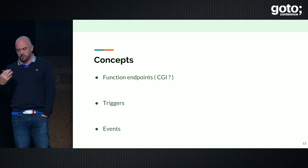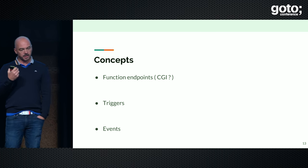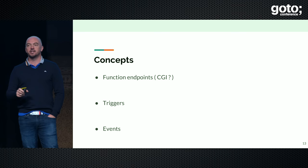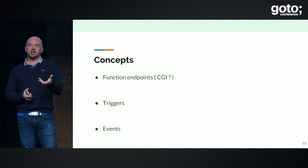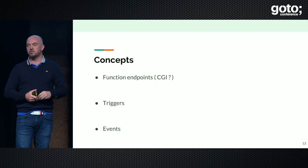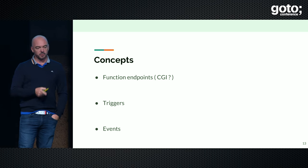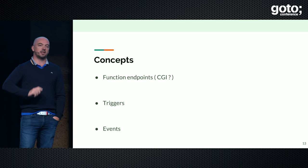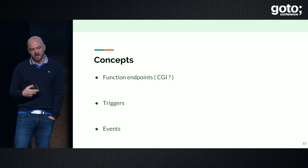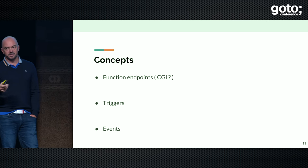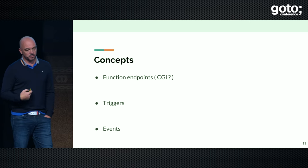When you build those things, you have three concepts that are important in terms of applications. You have the function endpoint. Serverless is about taking a function — def funk, print hello — and making that available over HTTP. We just have CGI, right? We haven't moved very far from CGI. Where it becomes interesting is that you now have a bunch of triggers. All your cloud services can emit events, and then you trigger your functions. So we're now back to building an event-based system, which is cloud-native.